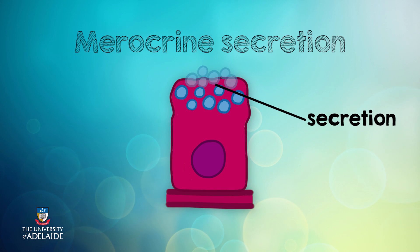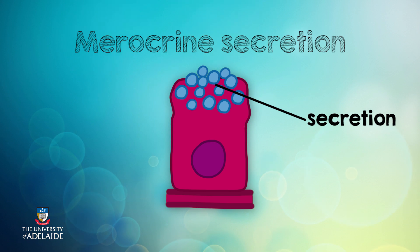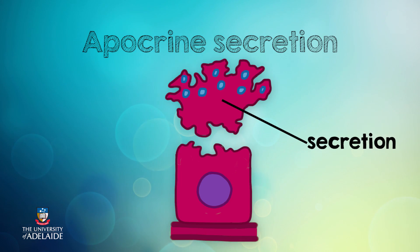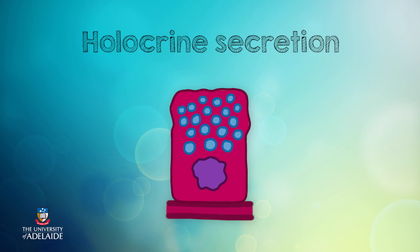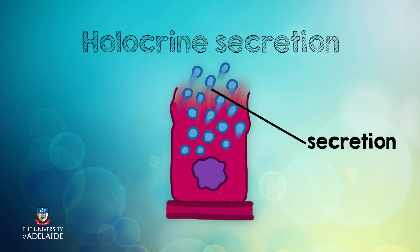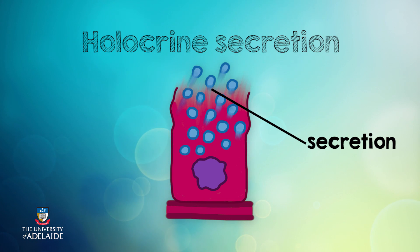Glands can also be classified on the way that they secrete. We have merocrine secretion, apocrine secretion, and holocrine secretion. In merocrine secretion, the product is released from secretory vesicles via exocytosis — most glandular secretion in the body occurs this way, including how sweat is released onto the skin. In apocrine secretion, a portion of the cytoplasm containing the secretion is released; milk production in the breast involves apocrine secretion. And finally, in holocrine secretion, the entire cell becomes so packed with secretion that it bursts, releasing the secretion but also killing the cell. The sebaceous glands in skin release sebum or oil via holocrine secretion.